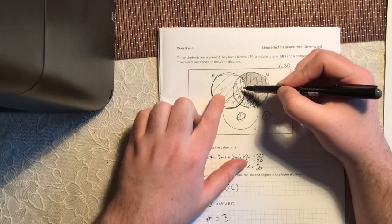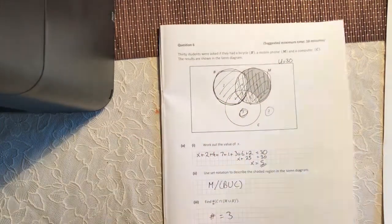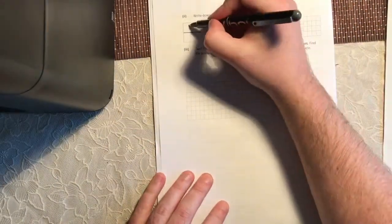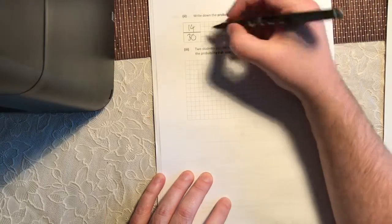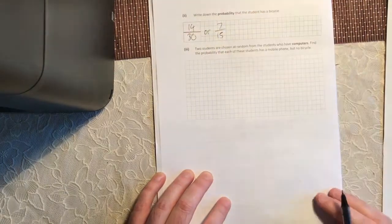But 2 students, 4 students, 7 and 1. So 7 and 1 is 8, plus 4 is 12, plus 2 is 14. So that means there are 14 students who have a bike. So you have a chance of getting 14 out of 30, or 7 out of 15, just simplifying my fractions there.